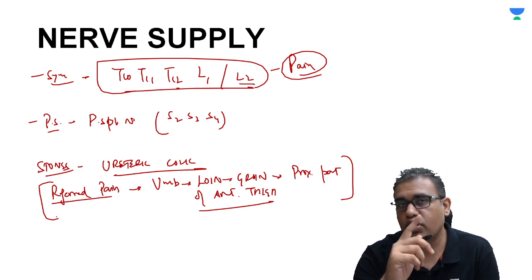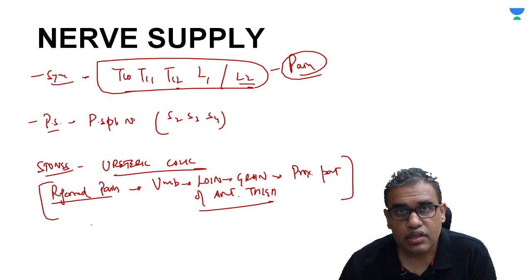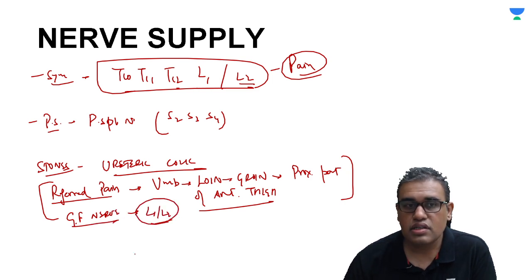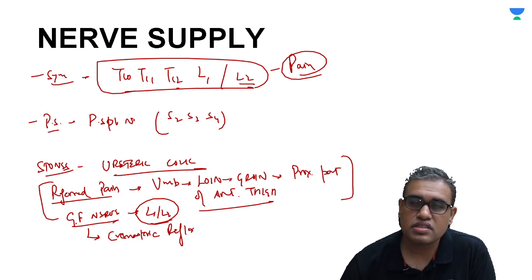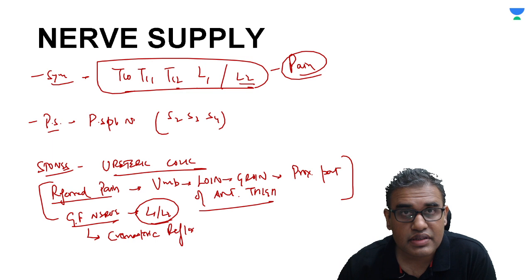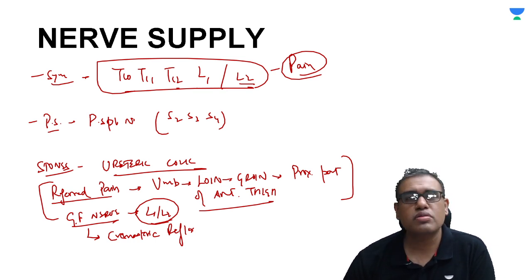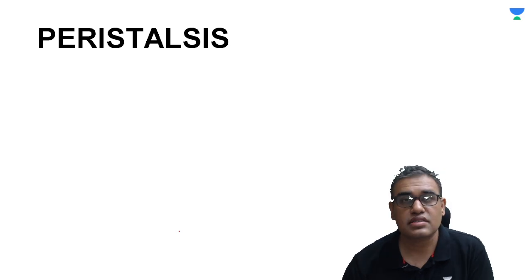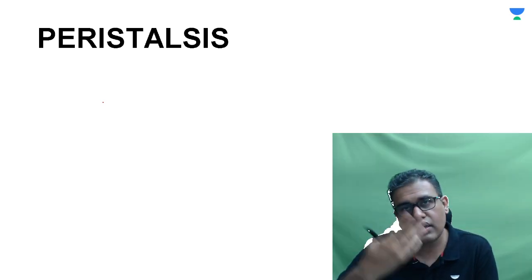Additionally, the genitofemoral nerve (L1–L2) lies behind the ureter on the psoas major. In ureteric colic, this nerve may be irritated, causing cremasteric reflex — in males, there may be slight elevation of the testis on the same side due to contraction of the cremaster muscle. The referred pain extends only to the proximal anterior thigh and does not go beyond, consistent with the nerve supply.